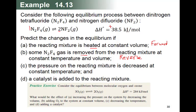For part (c): the pressure on the mixture is decreased, and temperature is kept constant so the equilibrium constant does not change. Since pressure decreases, the system goes toward the higher number of moles. The product side has two moles vs. one mole of reactant, so the reaction goes in the forward direction.